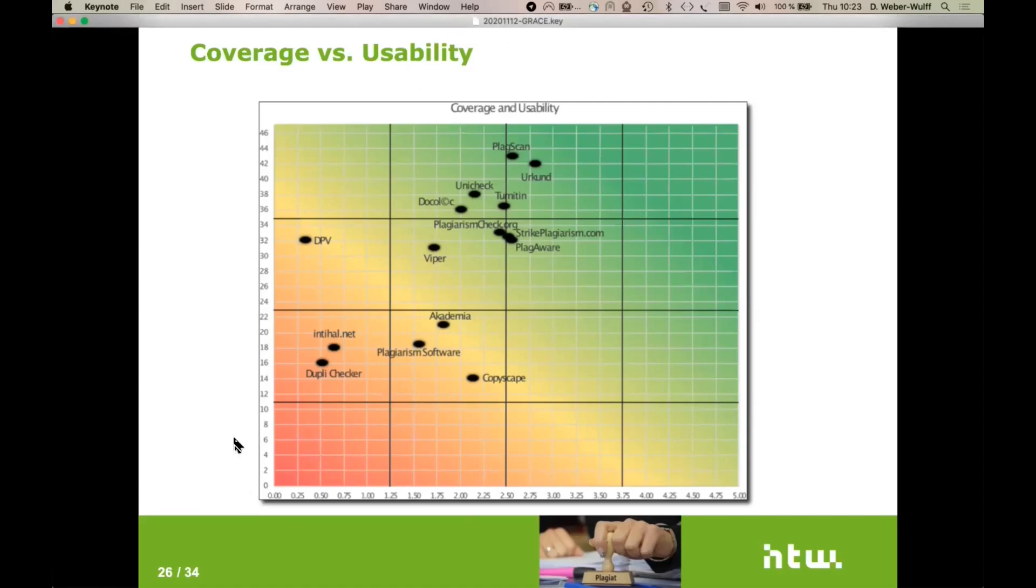The other dimension that we looked at was usability. Now we put together some criteria on usability. We had at least three researchers scoring the usability of the systems on a scale of doing either yes or no. Did they have the property or not? And so you can rather read this in this direction. That's why the colors go from red to green. And here at the top, we've had an interesting thing happening.